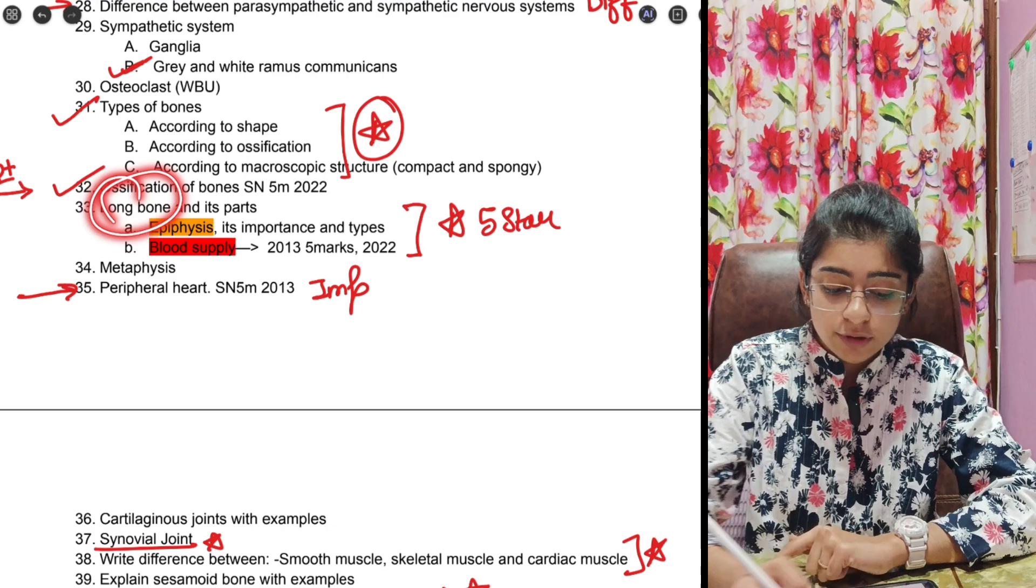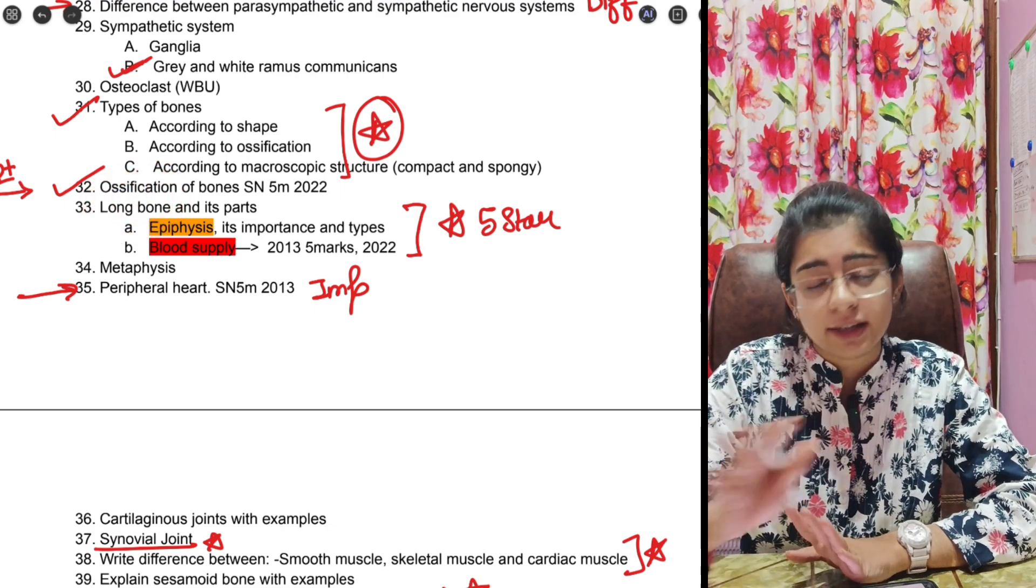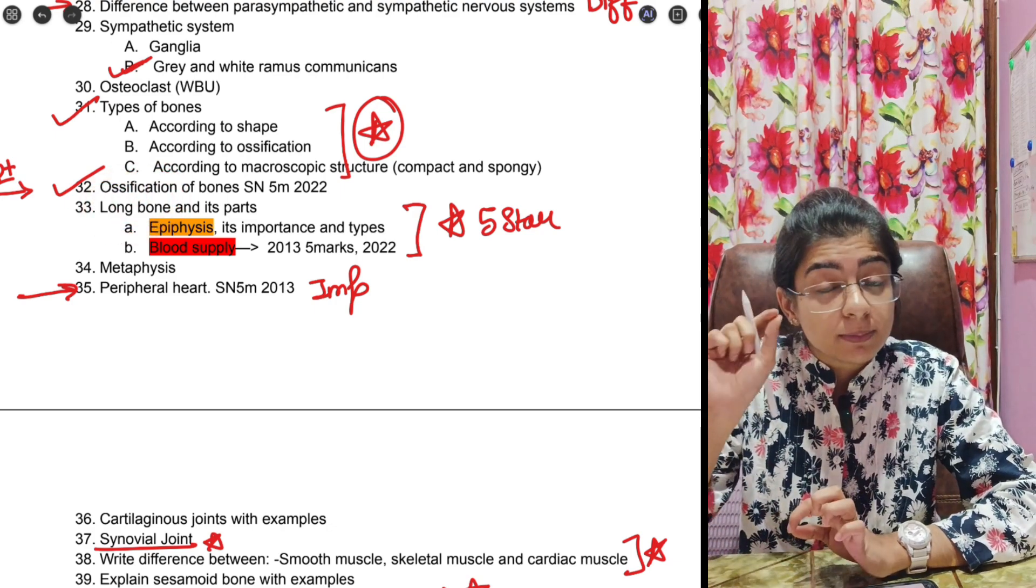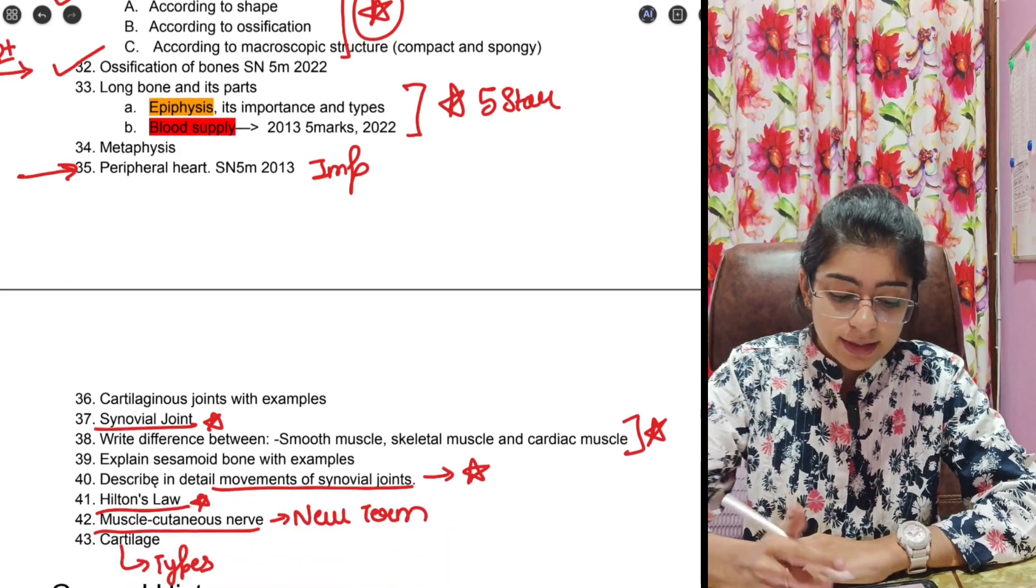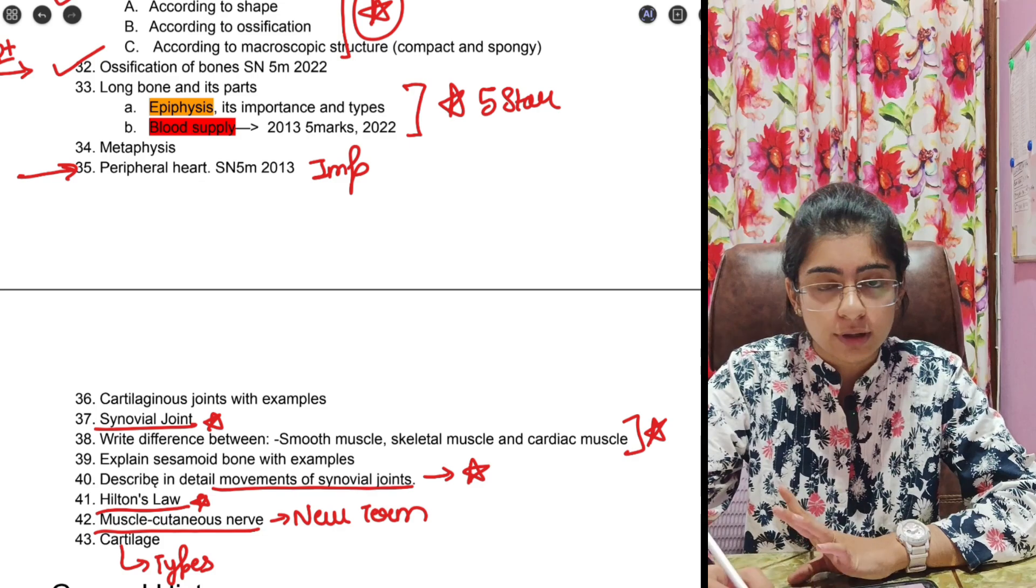Next is long bone, it is a very important question. The epiphysis, diaphysis, metaphysis all can be a short note, but blood supply of long bone can be a diagrammatic question separately. Next is peripheral heart short note, very important.